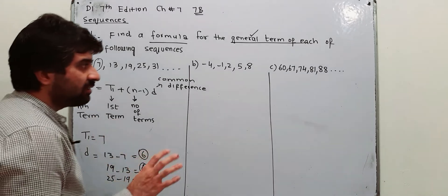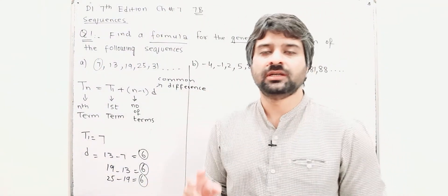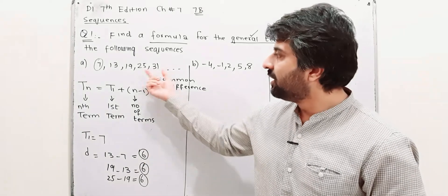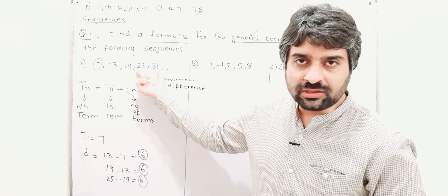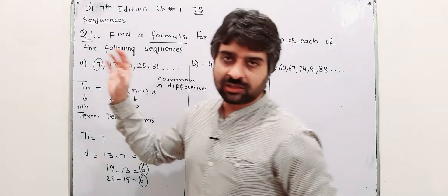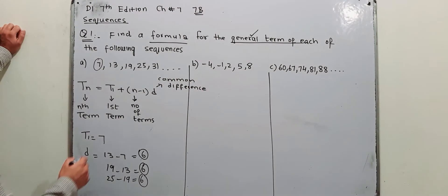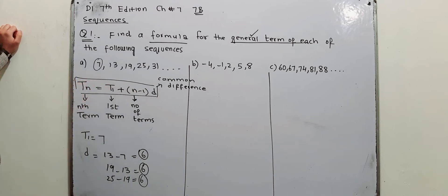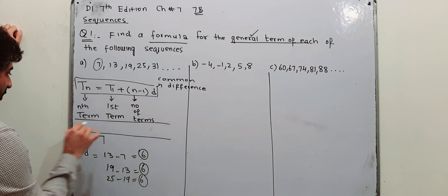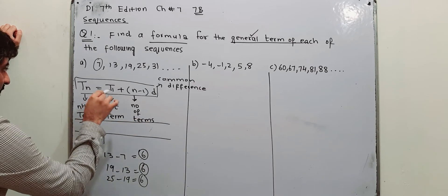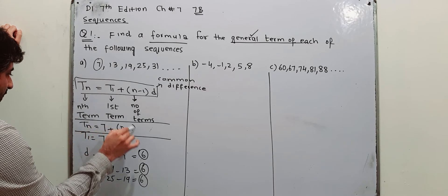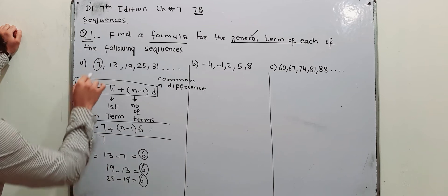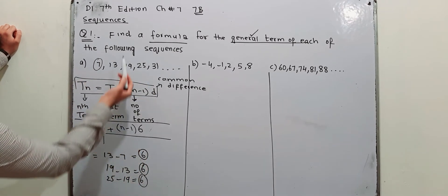In finding a formula for the general term, you need two things: T1 (term number 1) and D (the difference between any two consecutive terms). This is an arithmetic sequence — it has the same difference in all the terms. Writing down the general formula: Tn equals 7 plus N minus 1, and D is replaced by 6. So T1 is 7 and D is 6, obtained by subtracting two consecutive terms.